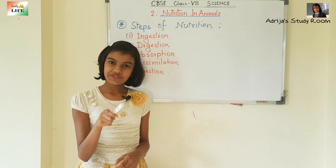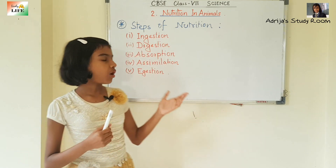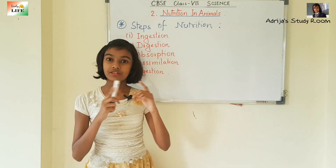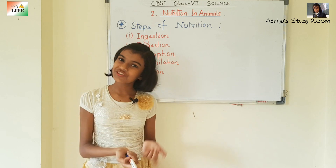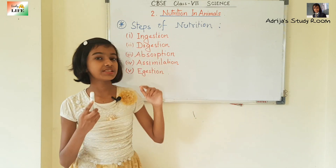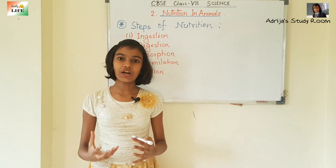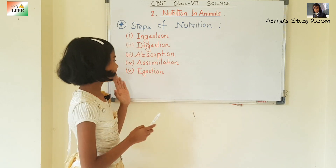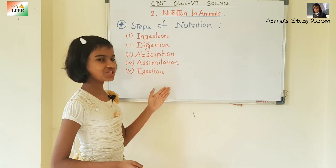Now let's move to the last step: egestion. All the nutrients cannot be absorbed by our body. So the food that is not digested has to be thrown out of the body. Egestion is the process by which the undigested food is thrown out of our body in the form of faeces. These are the five steps of nutrition.